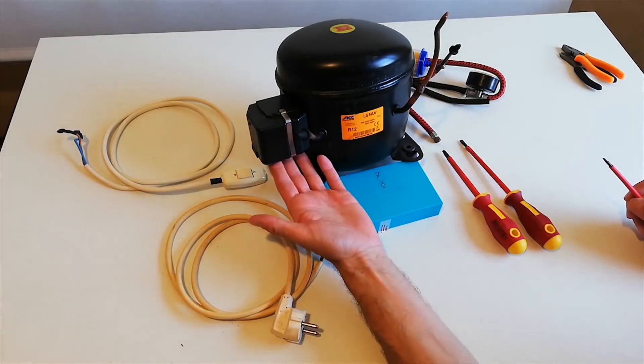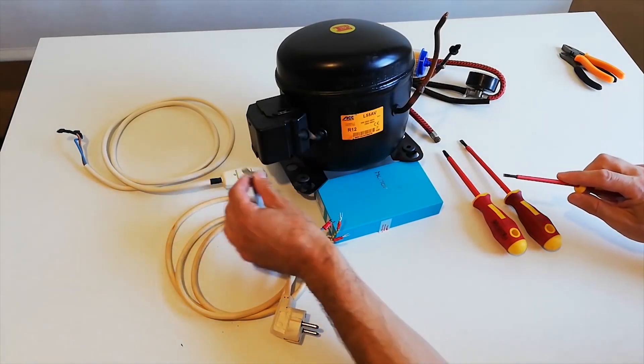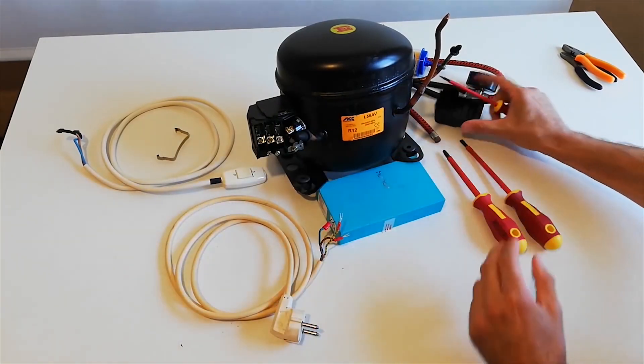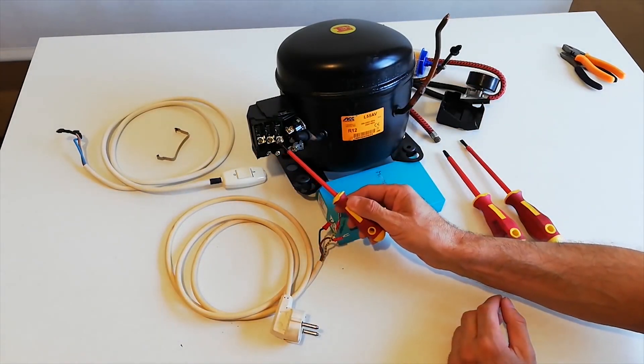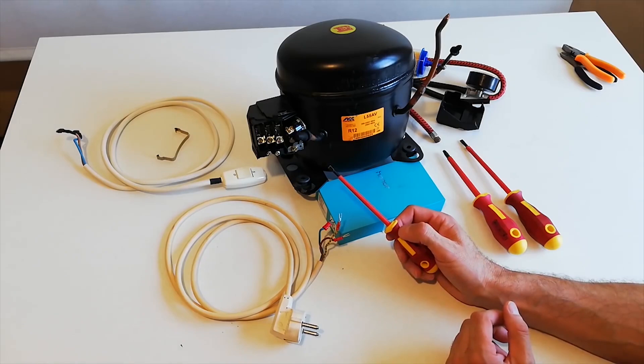First let's see the junction box of our compressor and where we should connect the power supply. Here we notice three connections. We will now see in a detailed diagram what they look like and where they should be connected.